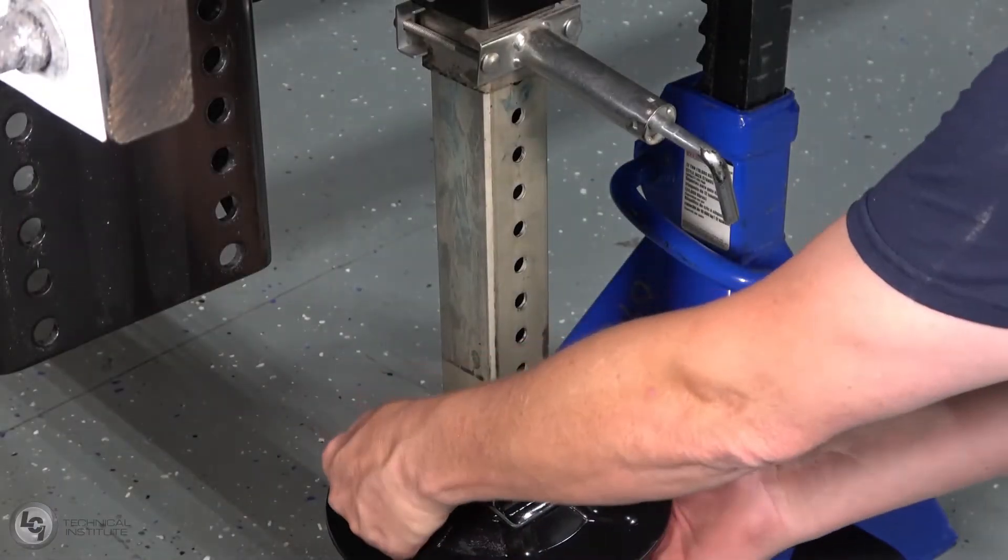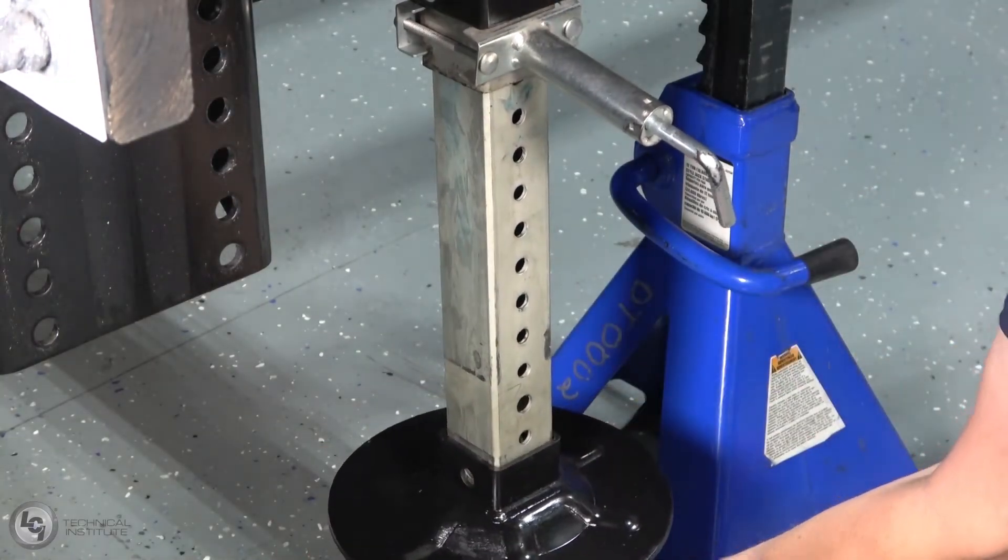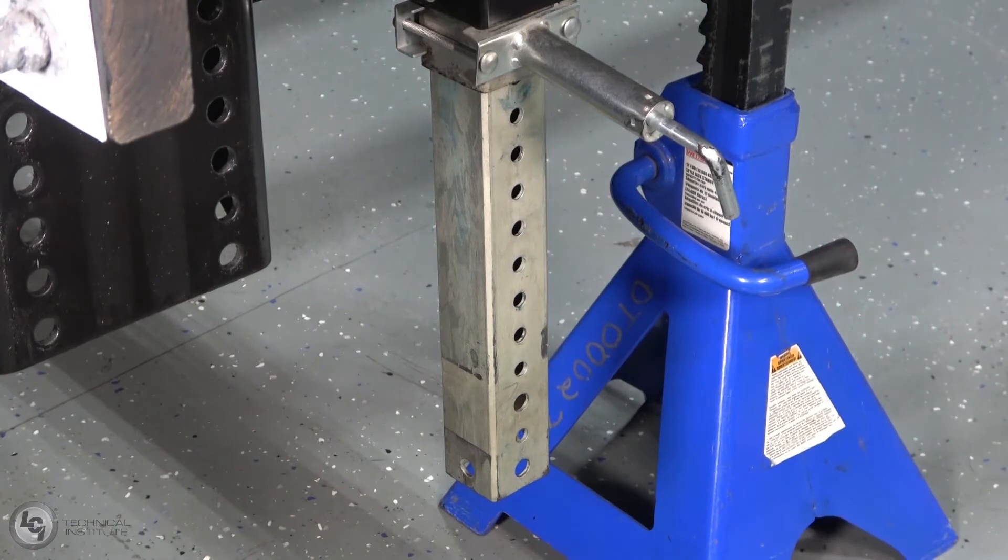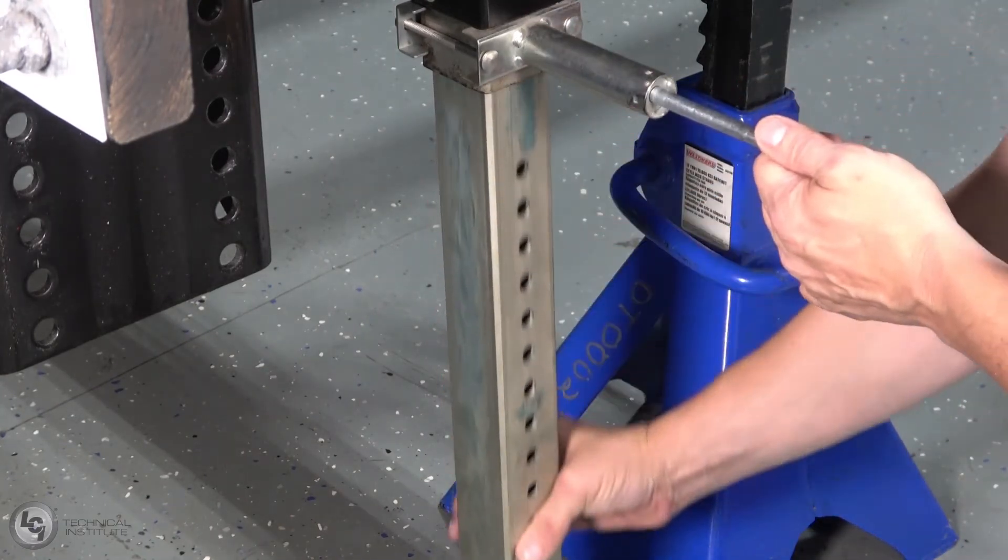Next, you will need to remove the foot pad. You can do so by disengaging the snap pin and pulling it free and removing the foot pad from the inner leg. We can now pull the pull pin back and remove the inner leg from the jack.